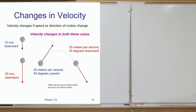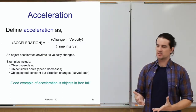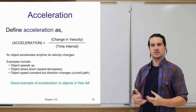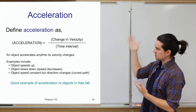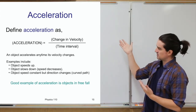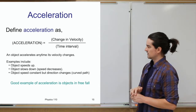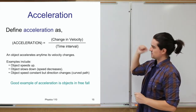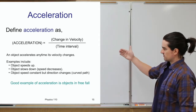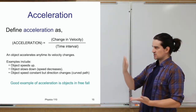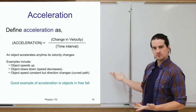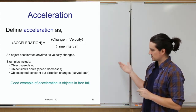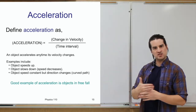Examples of accelerating objects: when an object speeds up, its velocity has changed — it's accelerated. When an object slows down, its speed decreases, its velocity has changed — also accelerated. When an object turns and changes direction, even if its speed stays the same, it's accelerated. A good example of an accelerating object is one in freefall — just released and pulled down to Earth's surface.